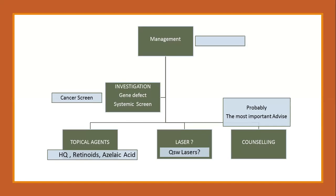Coming to management: management of these disorders is actually very tricky because the first step is diagnosis. Most of us do not have a gene defect analysis laboratory, but if you suspect these disorders, you should look for systemic screening properly. A cancer screen is useful for certain disorders, especially dyskeratosis congenita. The treatment of these disorders is very difficult. People have used extensions of melasma therapy — topical agents like hydroquinone, retinoids, azelaic acid — with variable results. People have tried lasers, but the most important thing ultimately is counseling.